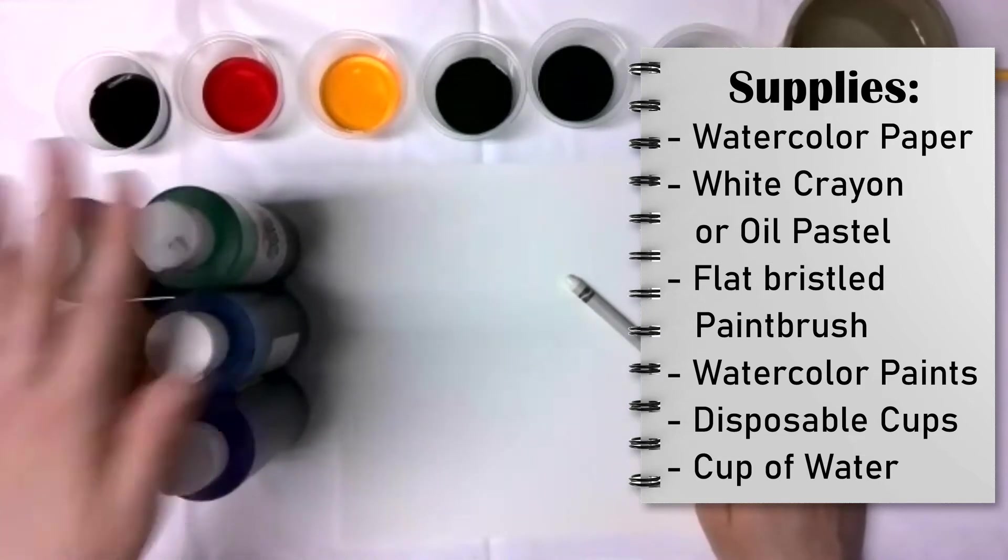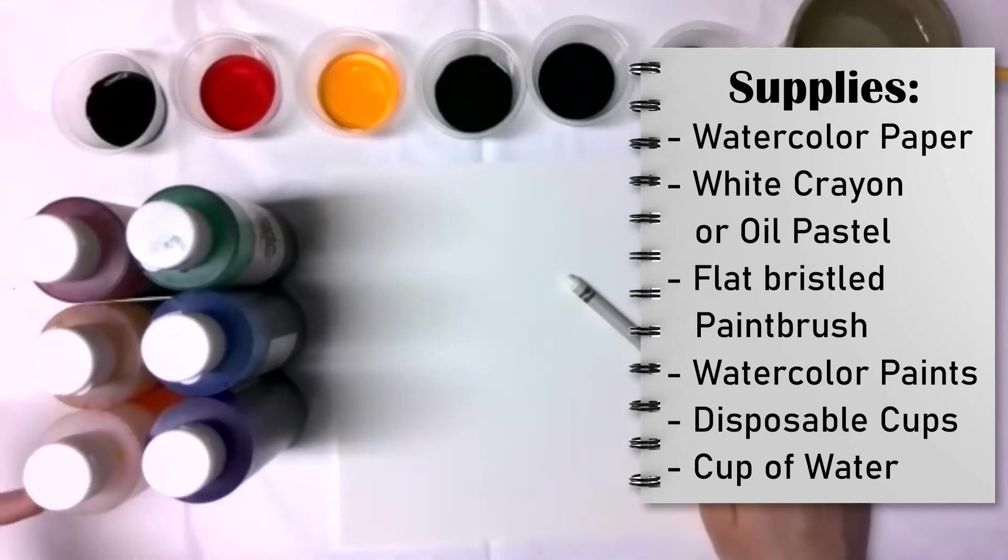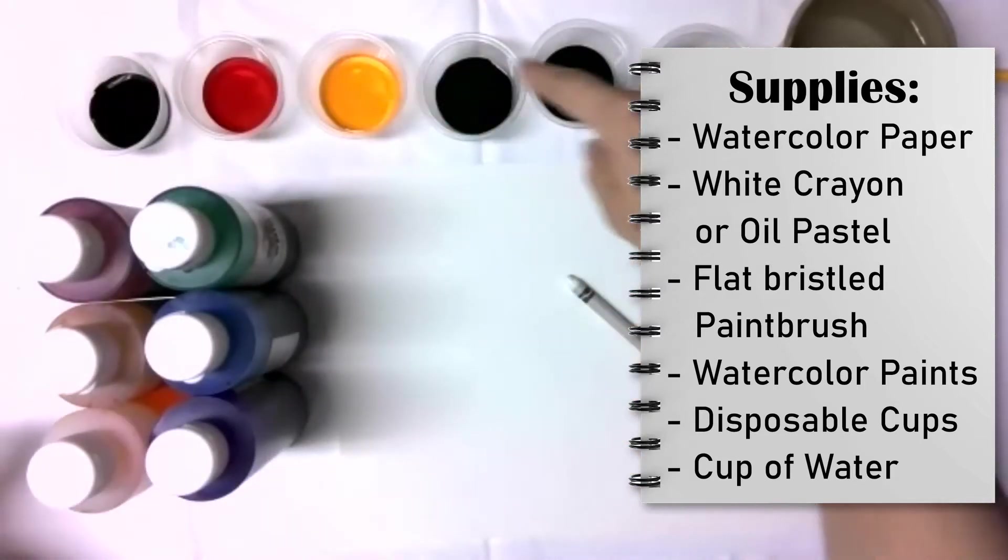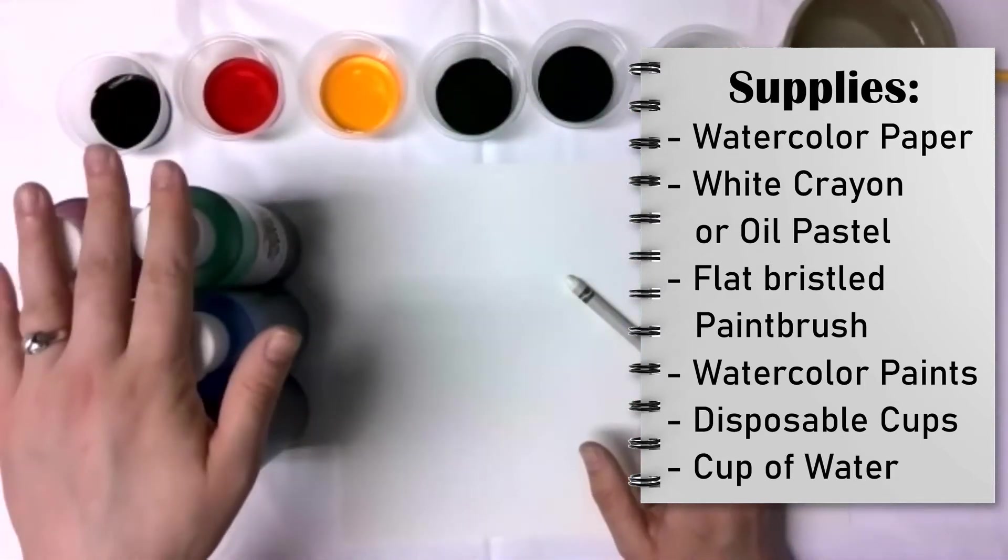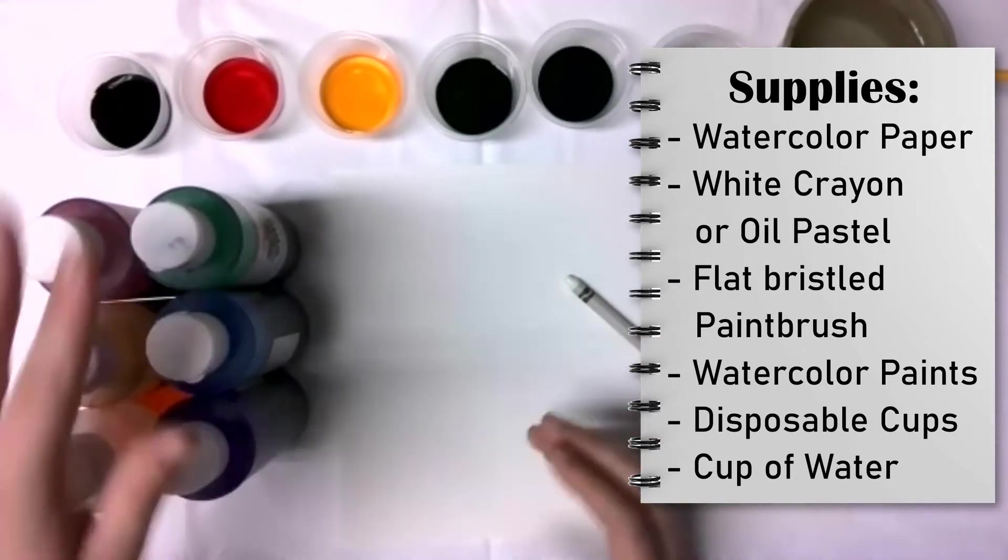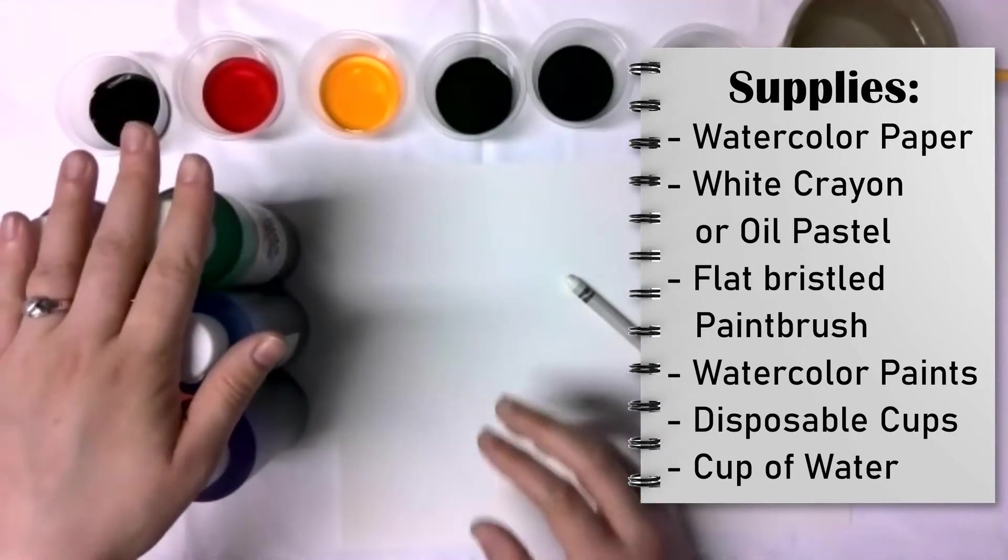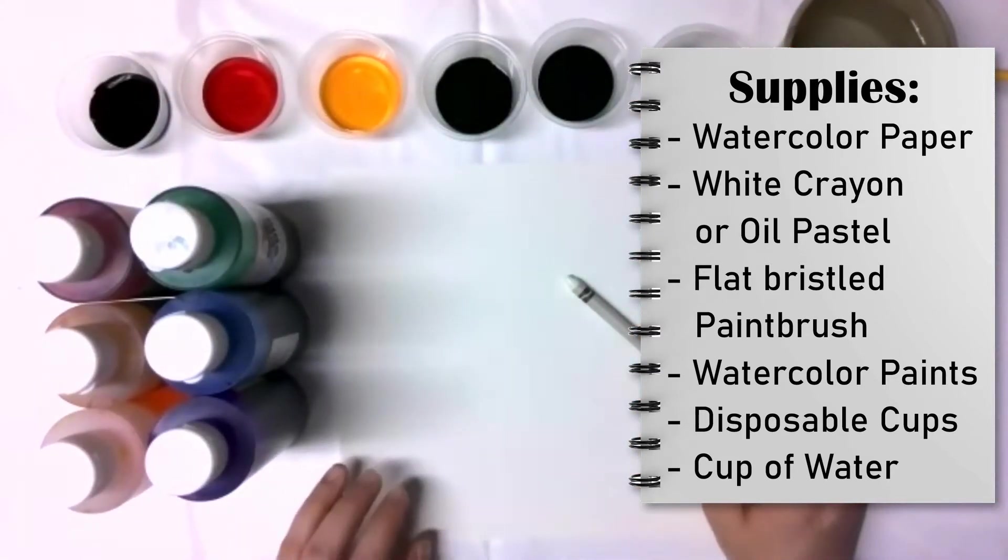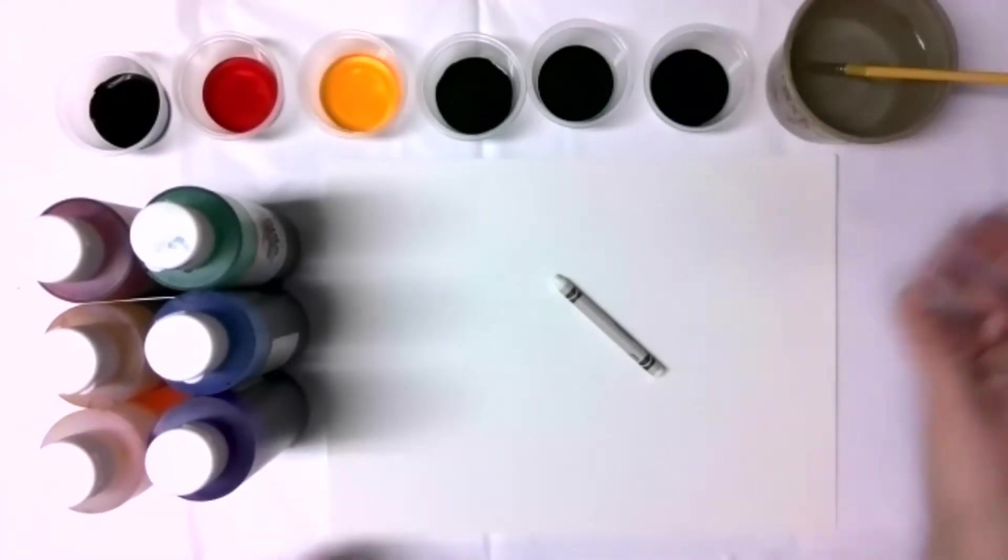You will need watercolor paints. I have red, orange, yellow, green, blue, and purple here, and they are in these little cups. So I'm using liquid watercolor paint. So if you use dry watercolor paint, it would come in a tray, but since I'm using the liquid watercolor paint, I will need disposable cups. So these are the little disposable cups I am using for each color, and then of course a cup of water to clean your paintbrush.